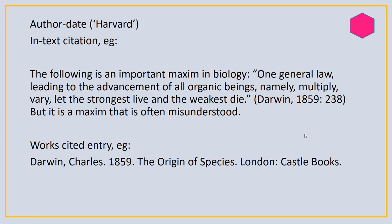The in-text citation goes in the text of whatever you're writing — it's a small piece of information that indicates to the reader where to go in the works cited list, which will be at the end of your document, to find the full bibliographic information. In Harvard, the in-text citation consists of the surname — here, Darwin — and the year of publication, which is 1859. Because we have an exact quote, the page number has also been included, so that's Darwin, 1859, page 238.